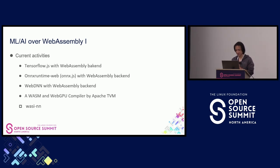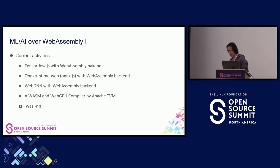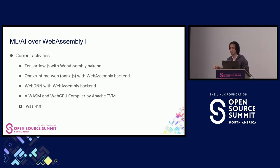WebDNN is a deep neural network execution framework for the web browser. It highly optimizes DNN models and executes them in the browser, using the next-generation WebGPU API for GPU execution and WebAssembly for CPU execution. There's also a web compiler — actually a WebGPU compiler — that builds a WebGPU runtime into a TVM JavaScript runtime and calls back to functions from the WebAssembly module when executing GPU code. But all of these still run in the web browser.